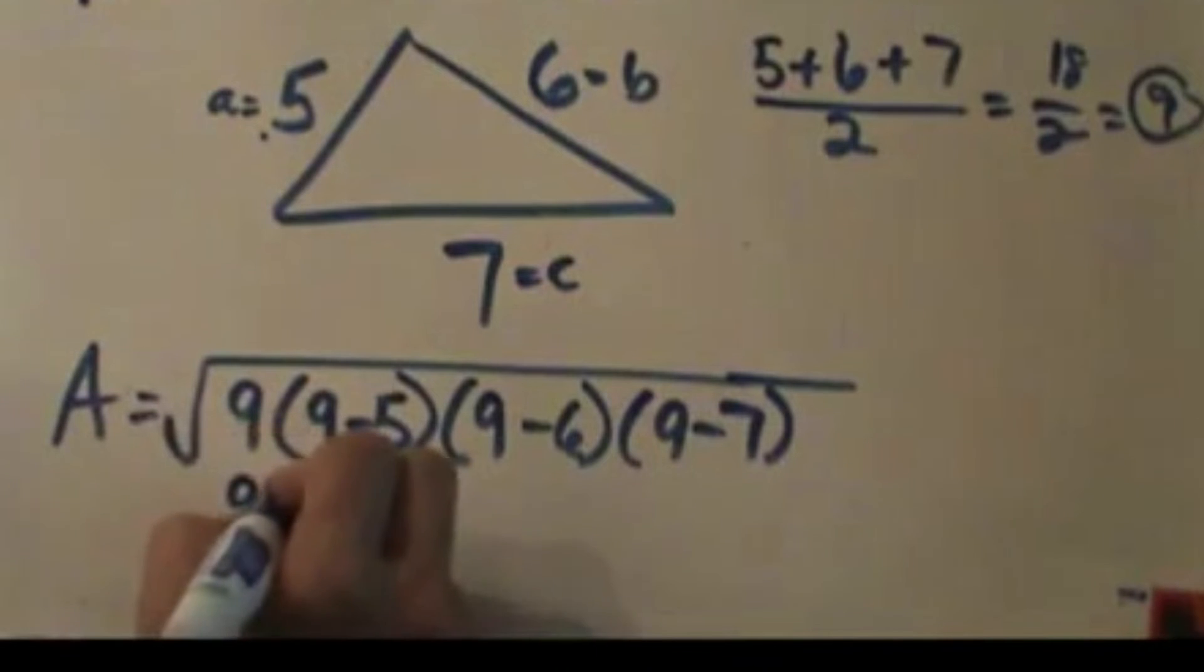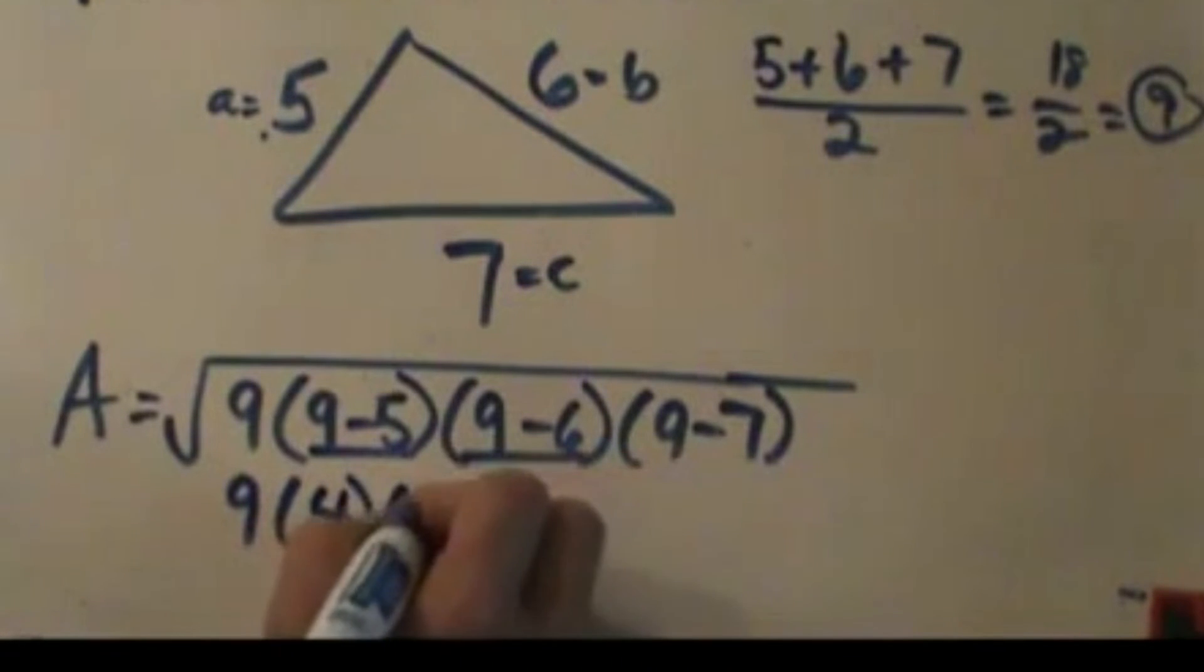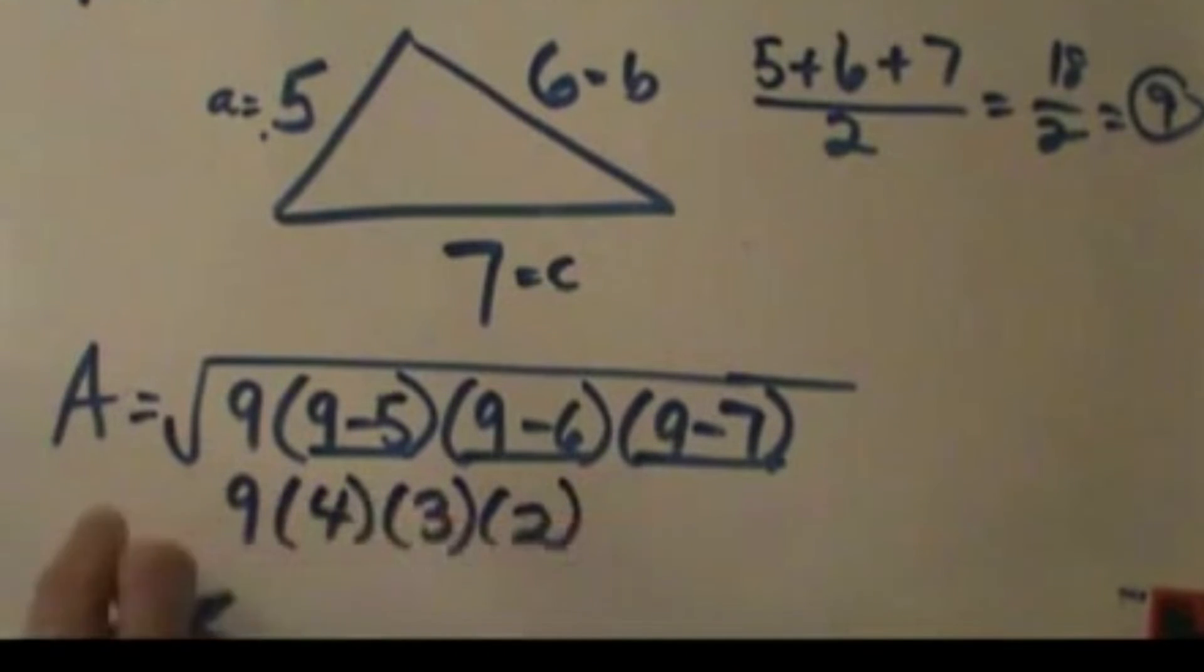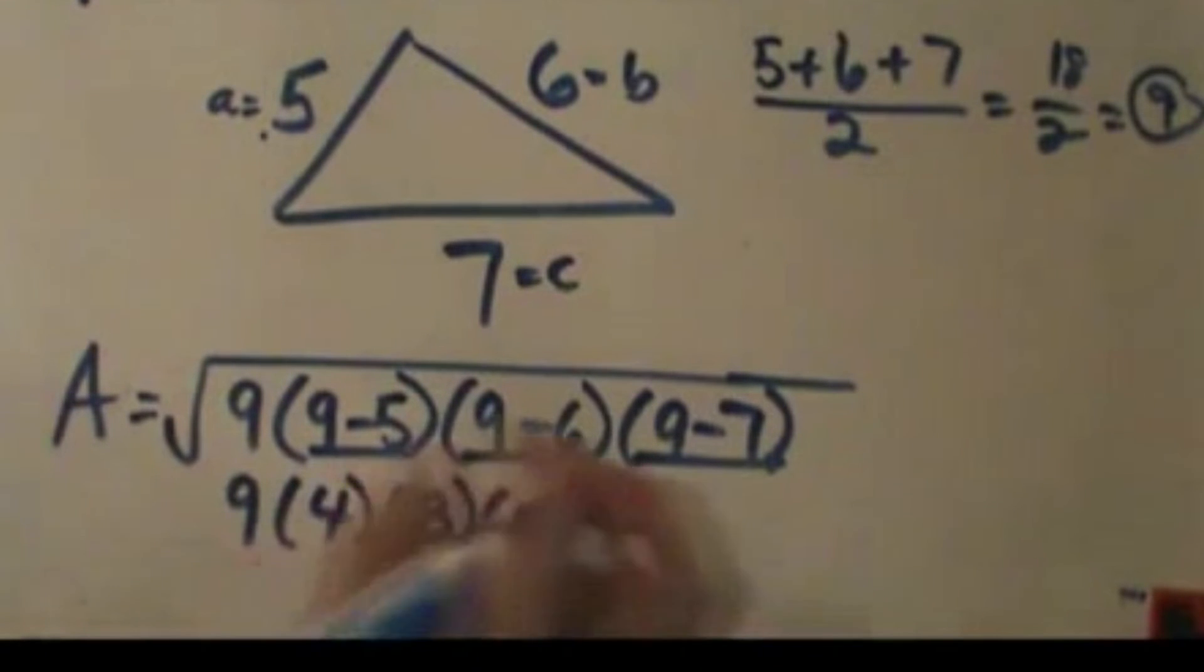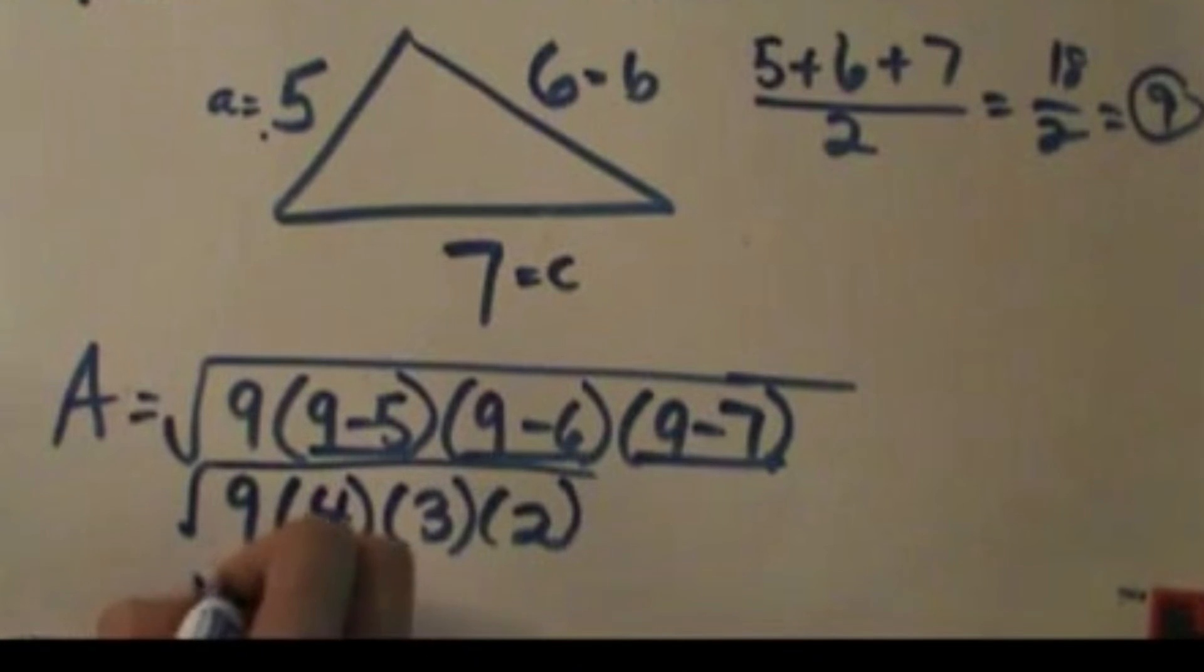So I'm going to take 9 times, 9 minus 5 is 4, 9 minus 6 is 3, and 9 minus 7 is 2. Now, when I multiply this all together, I get 216. So I have to take the square root of 216.